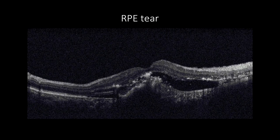RPE tear on OCT appears as indentation of the retina with increased hyperreflectivity in the area of contracted RPE with underlying shadowing hindering the choroidal view, in contrast to the area where RPE was ripped off, where Bruch's membrane is visible with increased visibility of the underlying choroid.